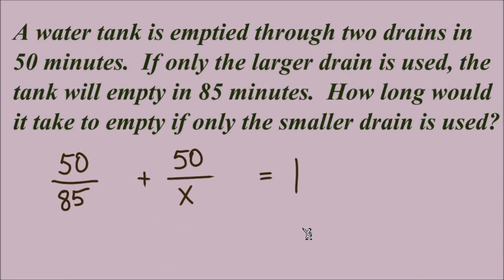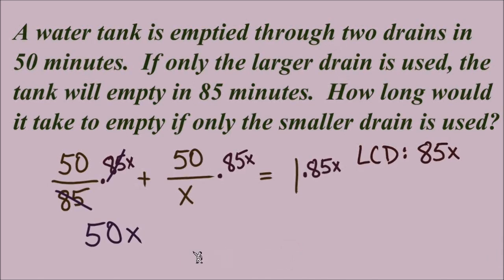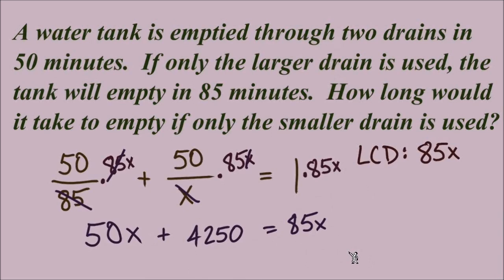Our steps for solving are the same. When denominators are one number and one variable, we multiply those two together: 85x is the common denominator. Multiplying every term by 85x and looking for canceling: from the first term, the 85's cancel, leaving 50x. In the middle term, the x's cancel, leaving 50 times 85, which equals 4,250. On the right side of the equation, 1 times 85x is 85x.